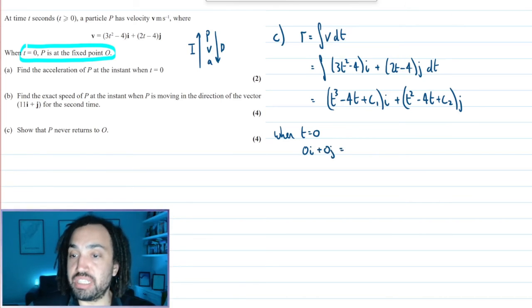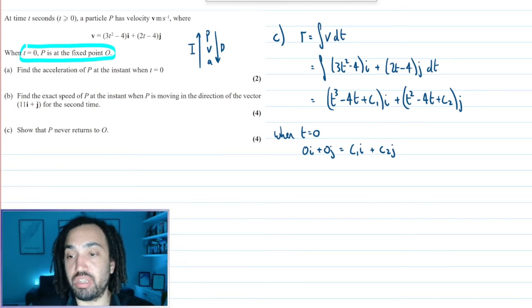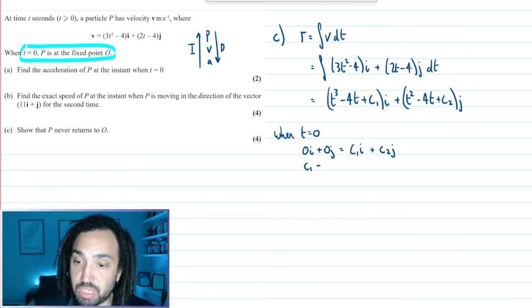So the position vector is 0i plus 0j. And when t is equal to 0, then all the t's cancel, so I'm just left with c1i plus c2j.